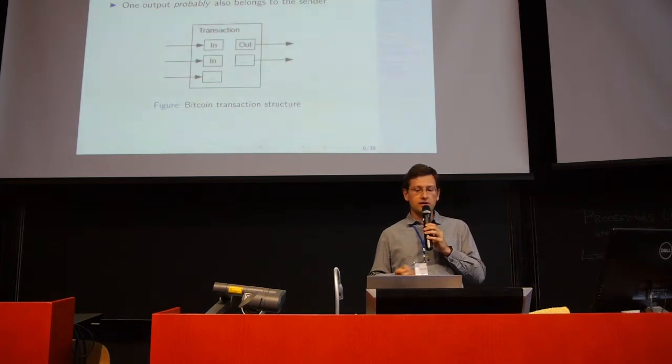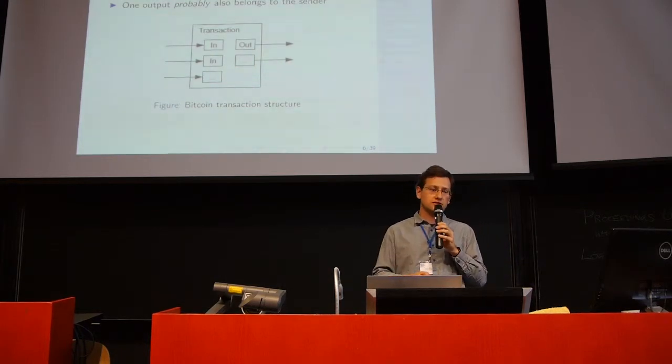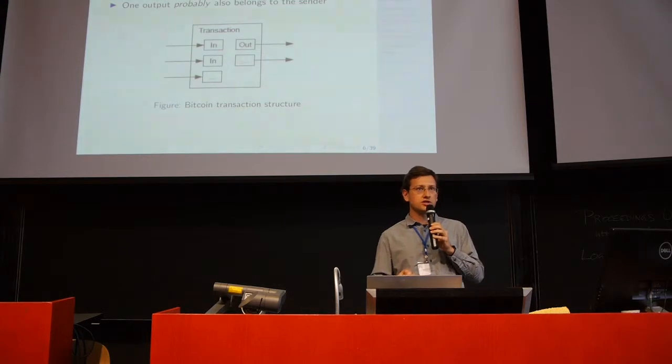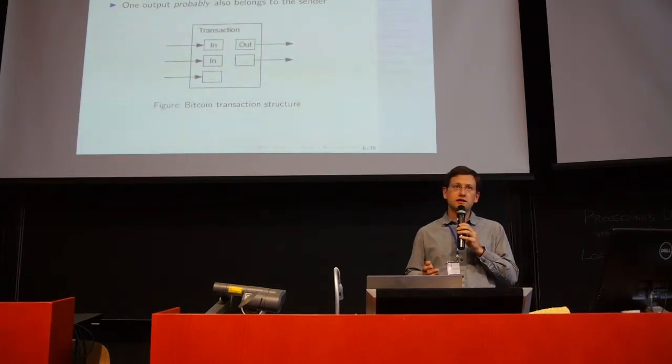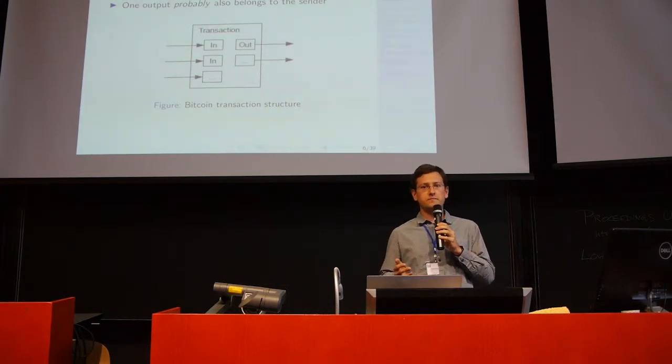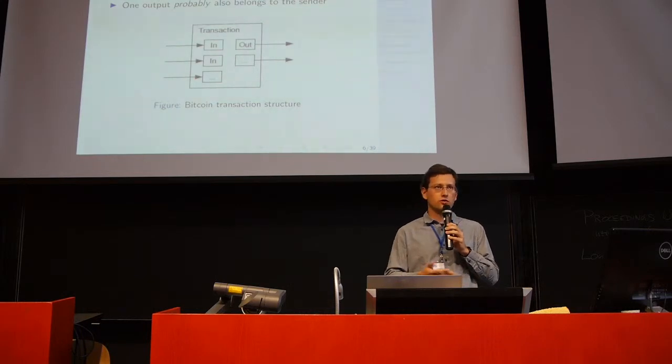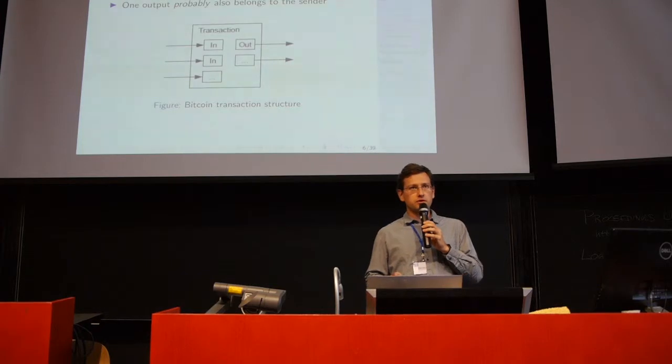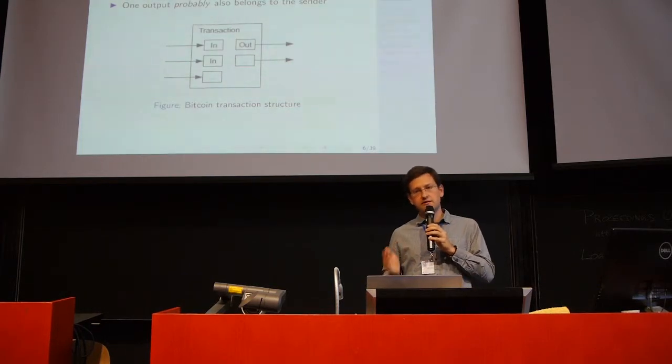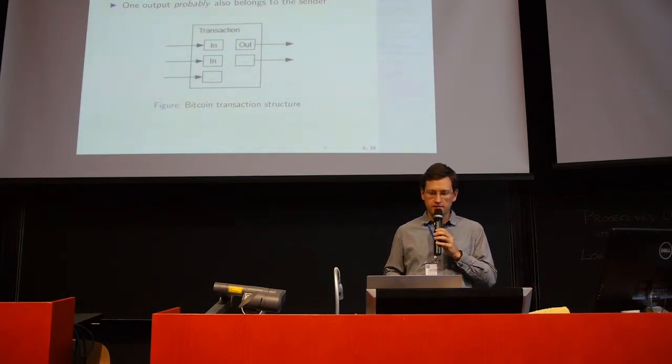Another heuristic is that one of the outputs probably also belongs to the sender, because this is the so-called change address. And by using such heuristics, an adversary can identify quite a lot of information, also can leverage public knowledge about which addresses belong to known exchanges or known big service providers. This is a popular vector of de-anonymization, and there are multiple papers written about that.